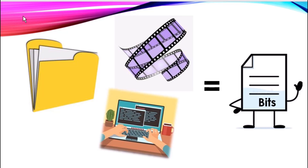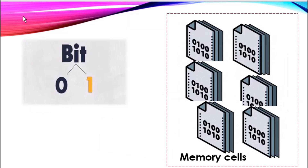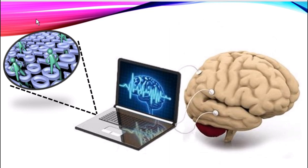The computer memory stores all this data in basic units called bits. A bit is simply a binary digit, and each of these bits are stored in what we call a memory cell. This memory cell exists in two states — zeros and ones. Files and programs in the memory consist of millions of these bits. These bits are processed in the CPU, which is the computer's brain.